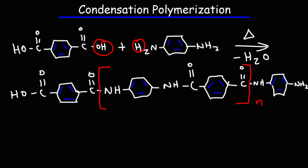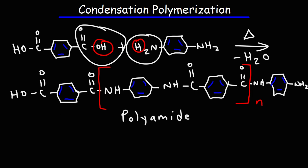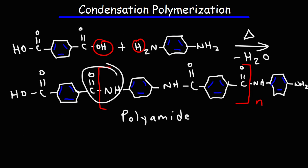This particular polymer is known as a polyamide, due to the amide functional group formed when a carboxylic acid reacts with an amine. This particular polyamide is known as Kevlar. There are also polyesters and polyurethane, but those are topics for another day.